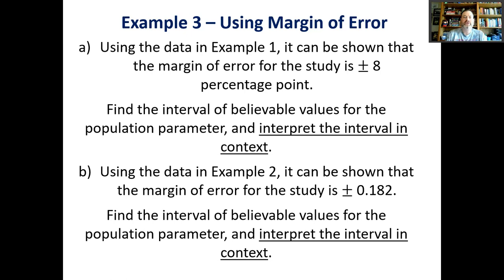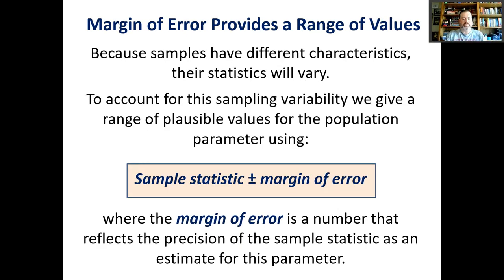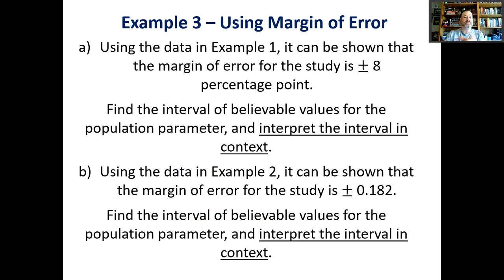Margin of error and standard error are similar but not the same. Margin of error tells us how precise our estimate is for the parameter. Using the data in example one, it can be shown that the margin of error for the study is plus or minus eight percentage points. Find the interval of believable values for the population parameter and interpret the interval in context. For Part A, that particular sample is considered accurate within plus or minus eight percentage points.